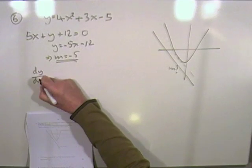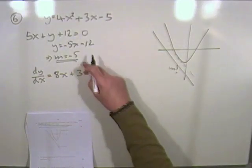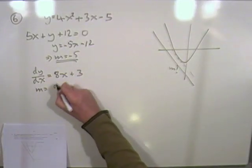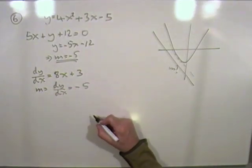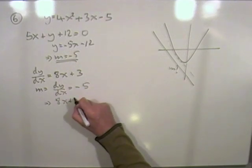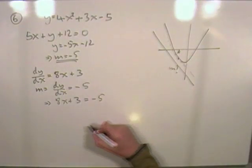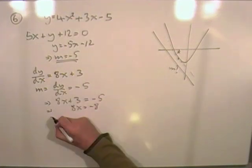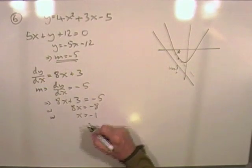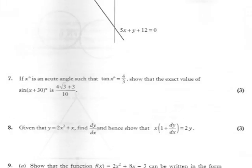So we've got dy by dx will be 8x plus 3. And if m equals negative 5, that means the gradient will be given by the derivative, which should then also equal negative 5. So that means 8x plus 3 should equal negative 5 at this point. I want this x-coordinate here. We'll just solve that equation. 8x equals negative 8, which means x equals, divide by 8, negative 1. That's about it. On to question 7. Pause and try question 7.